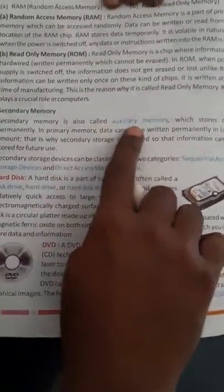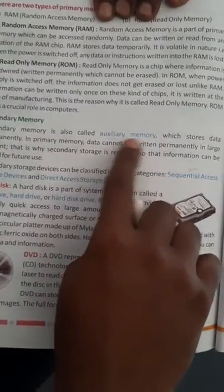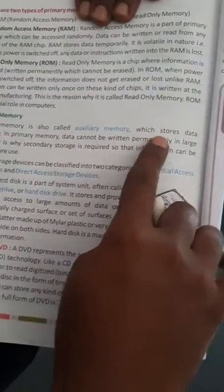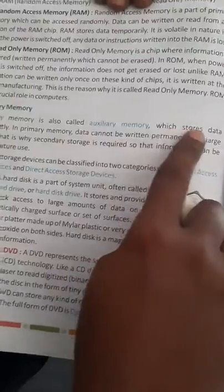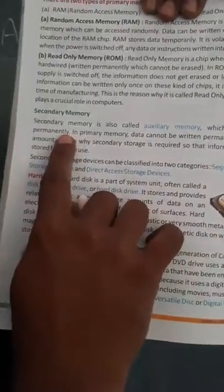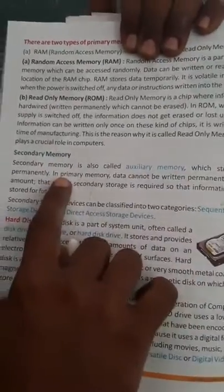Secondary memory is also called auxiliary memory, I mean external, which stores data permanently. These secondary memories store data permanently.